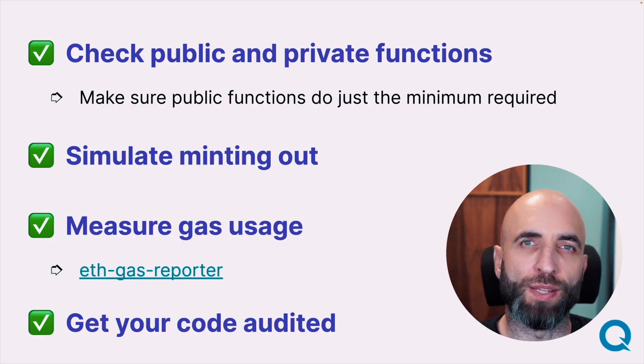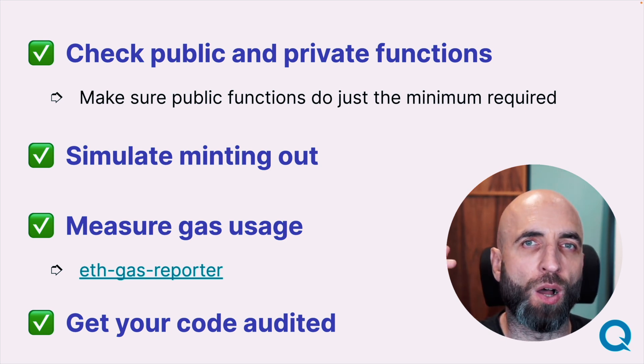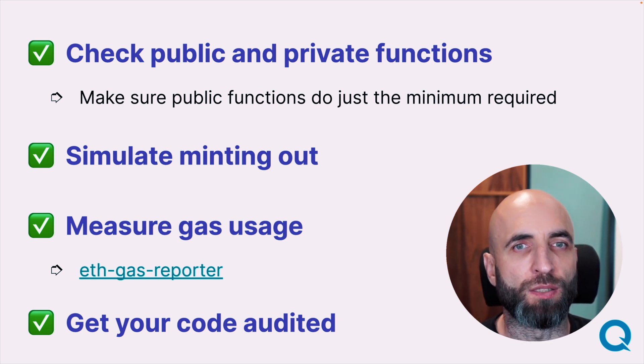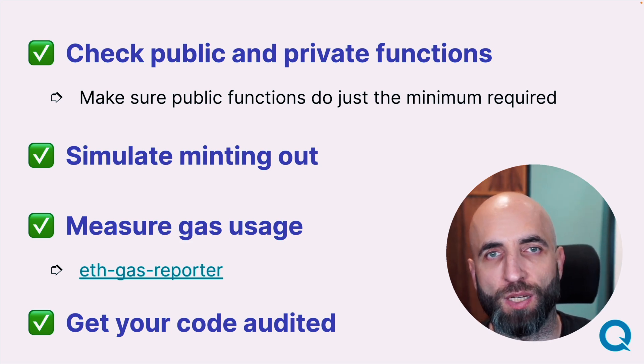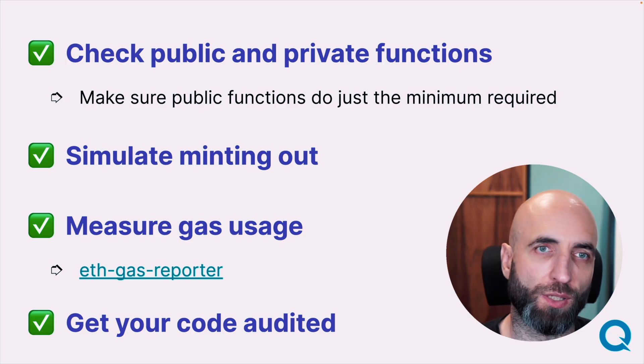Similar to checking access control for all functions, also go through each function and think about whether it needs to be public, private, external, or internal. Some functions that are usually public can actually be just external — which is almost the same but not the same — and external also costs less gas than public, saving money for both you and your NFT project users.